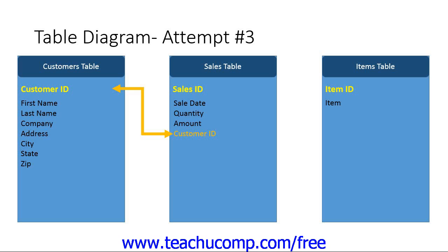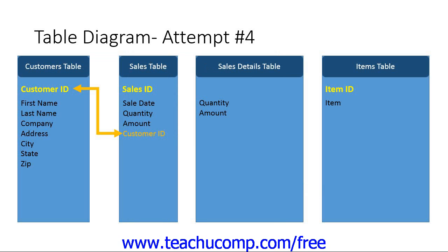Now examine how this new sales details table will affect the data model. The new table of sales details will also need to contain a primary key field. Before assigning the primary key field, look at how you will relate the sales table to the sales details table. The tables are related in that each sale may have one or more items purchased. So you need to join each record in the sales details table to the sale record to which it corresponds. To do this, you will add a foreign key into the sales details table that corresponds to the primary key of the sales table — so you will add the Sales ID field to the sales details table.